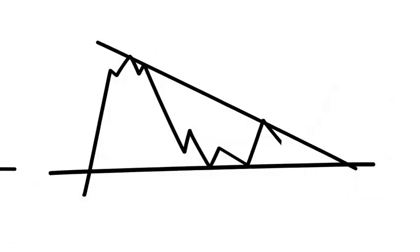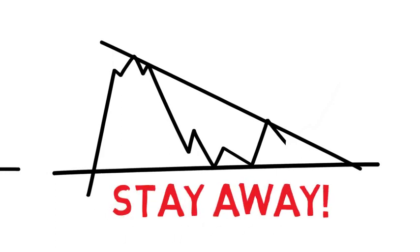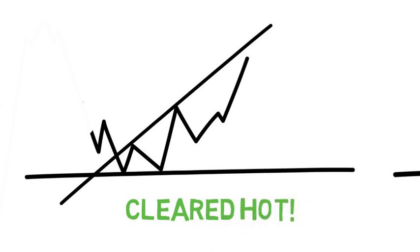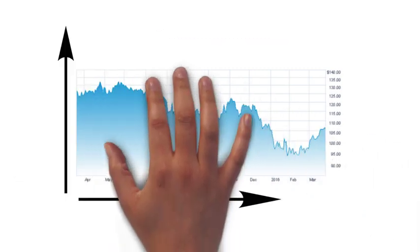If the support has a higher slope than the resistance, it usually means the trend is weakening, and you should probably avoid buying the stock. But, if the support has a lower slope than the resistance, it means that the trend is strengthening, and you should probably buy.